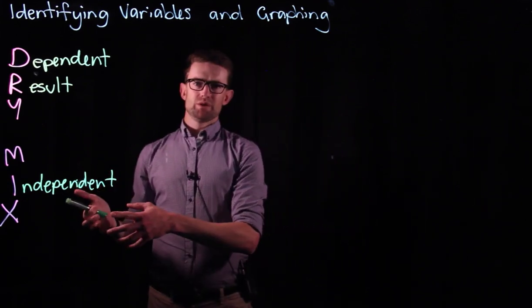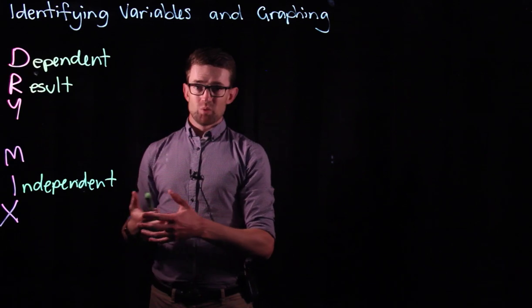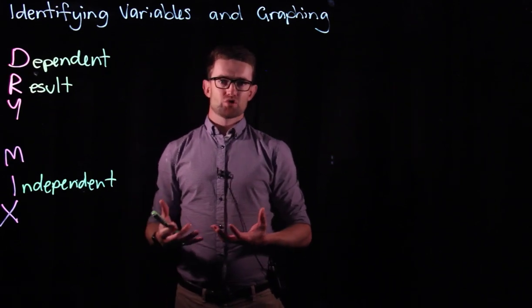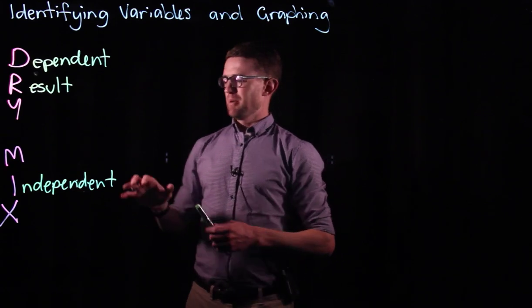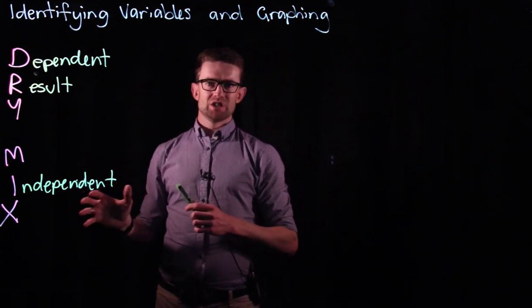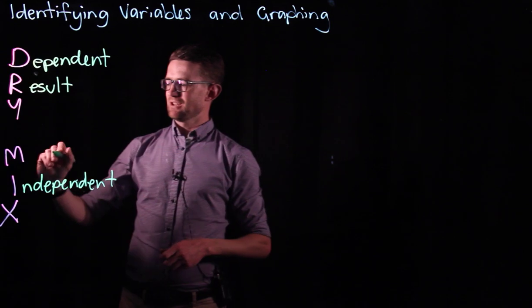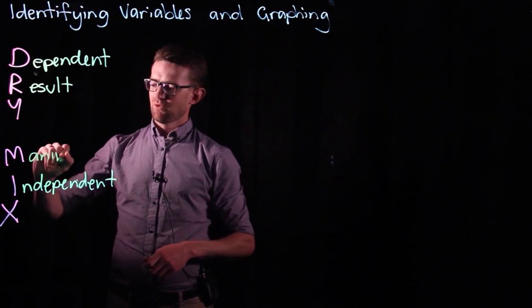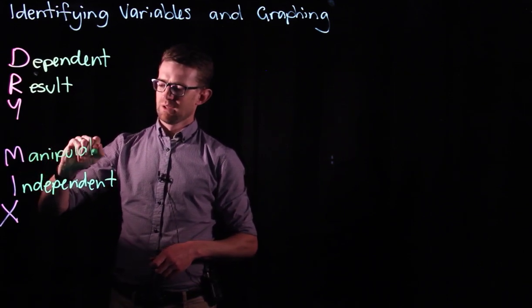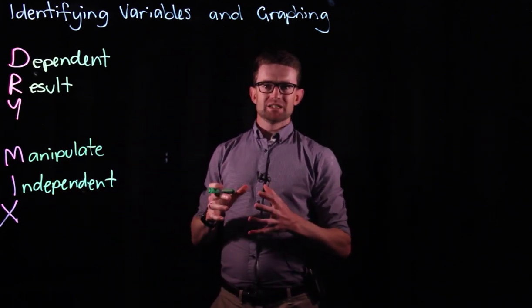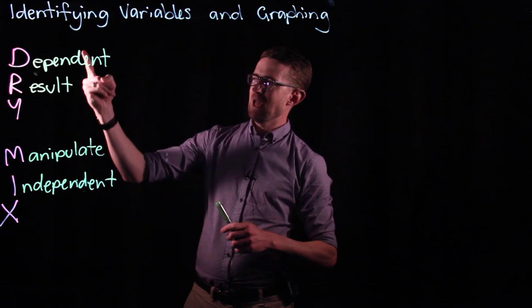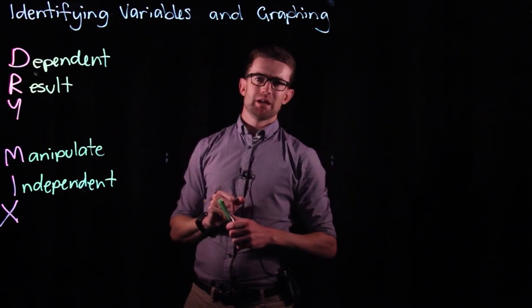The independent variable however is the one that we have some control over. It's the one that we make our decisions about whether we're going to change it or manipulate it. And so the M stands for manipulate. It's the variable that we adjust and change to see how it affects the dependent variable.